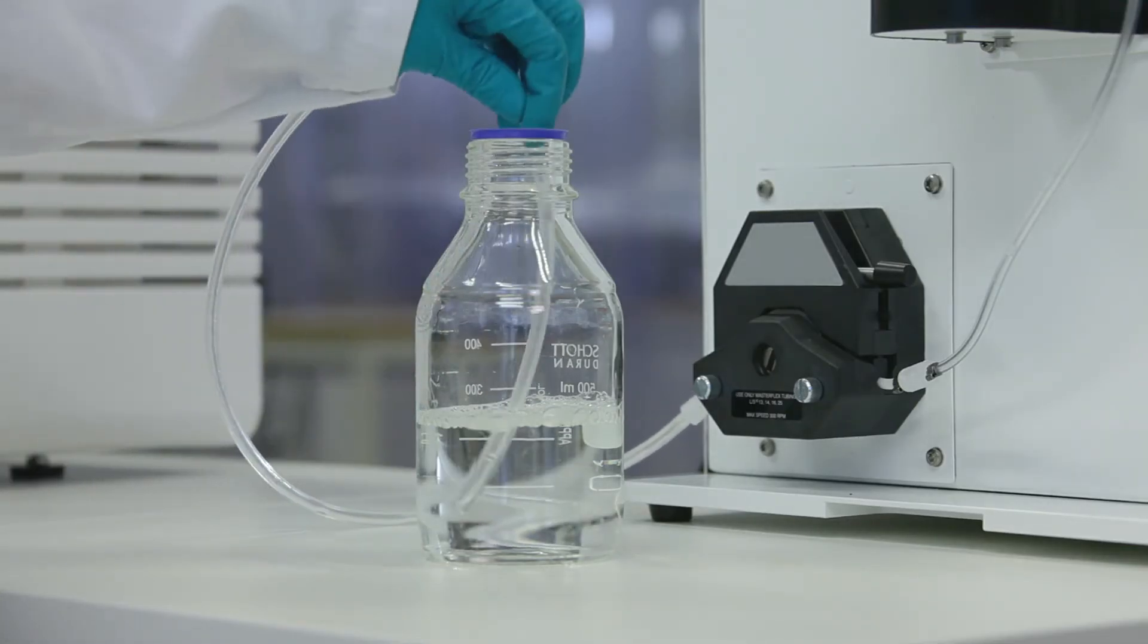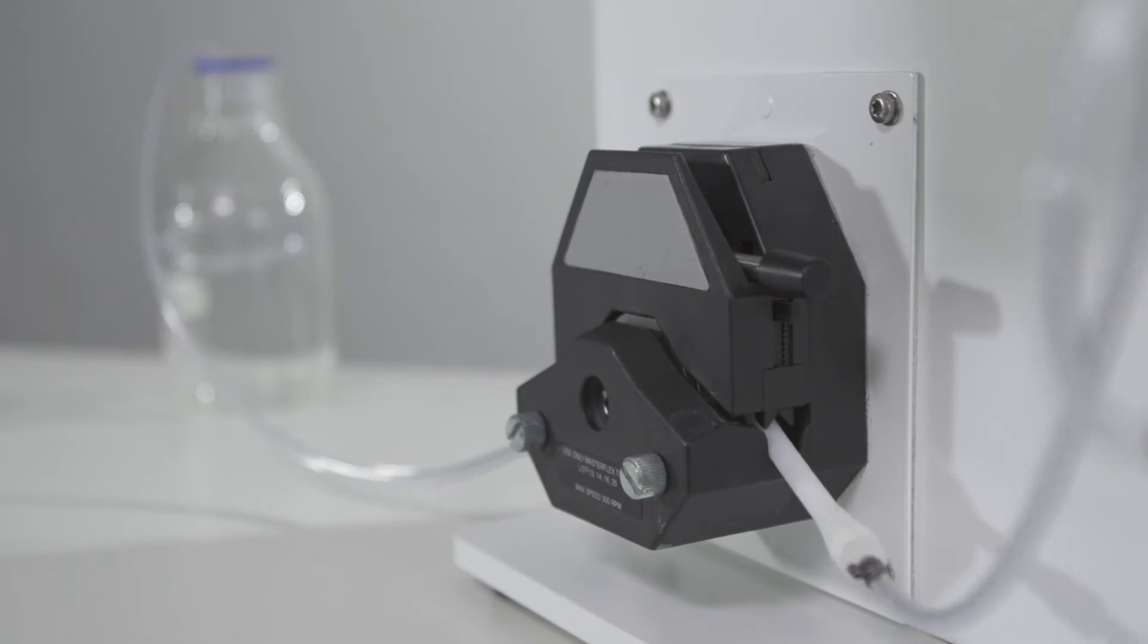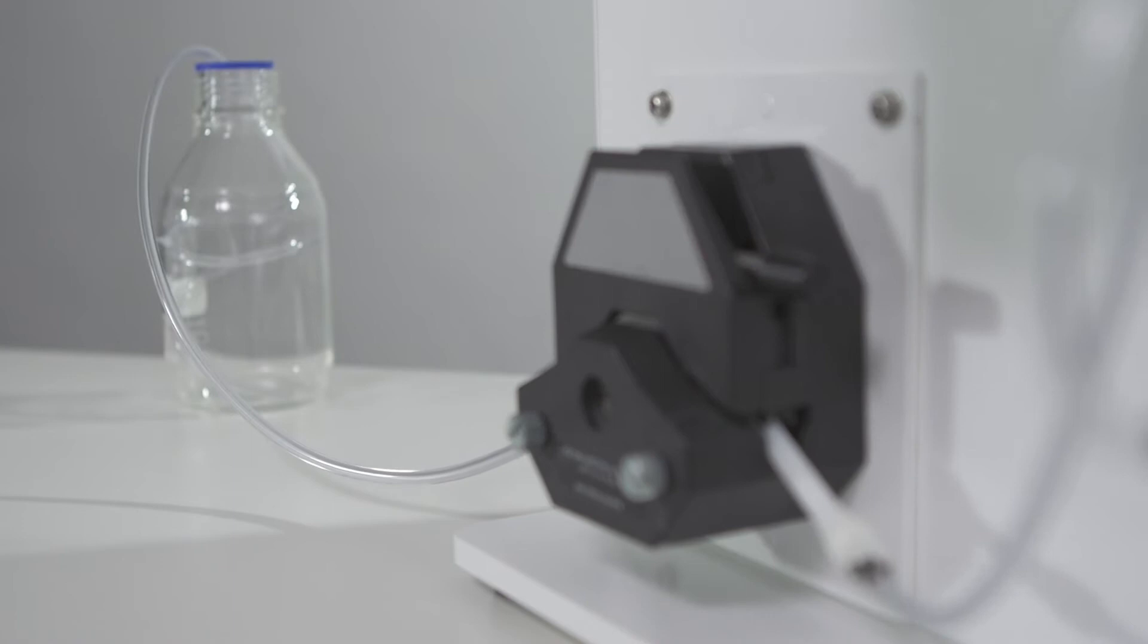To prepare for diafiltration, place the tubing from the transfer pump in a flask. The transfer pump enables automated continuous diafiltration with minimal buffer consumption for efficient buffer exchange.